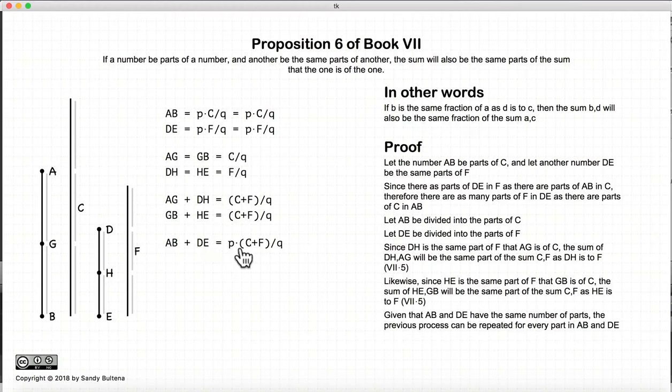So if we add them together, we end up with some multiple, or that the fraction c plus f over q measures ab plus de. And it is because for every ag, there will be a dh. And no matter how many times you divide this, this will also be divided the same number of times, because of our original condition. So therefore we have that if we have two numbers that are parts of another two numbers, so ab and de are the same parts of c and f respectively, then the sum of ab plus de will be the same parts of c plus f.